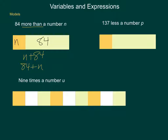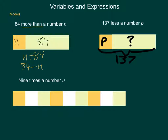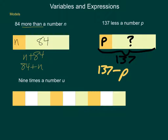Next, if I say '37 less a number P' — the wording on these can sometimes be awkward — we have our variable P representing some unknown value, and the entire quantity is 137. So when we write this out, we end up with 137 minus P. We're starting with 137 and going less by the value of P, so 'less' denotes subtraction. If you're told what the variable is, make sure you use that given variable. If you aren't told, you can select one of your own choosing.